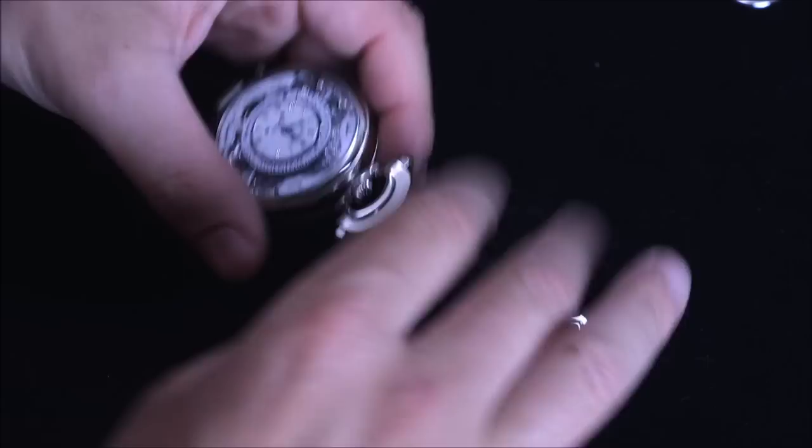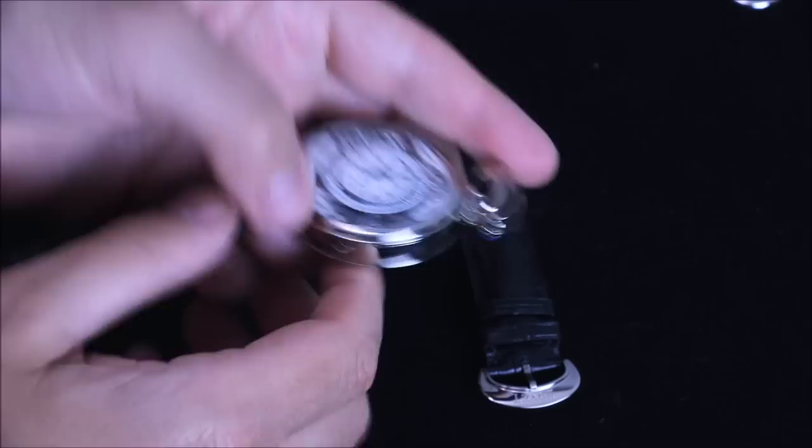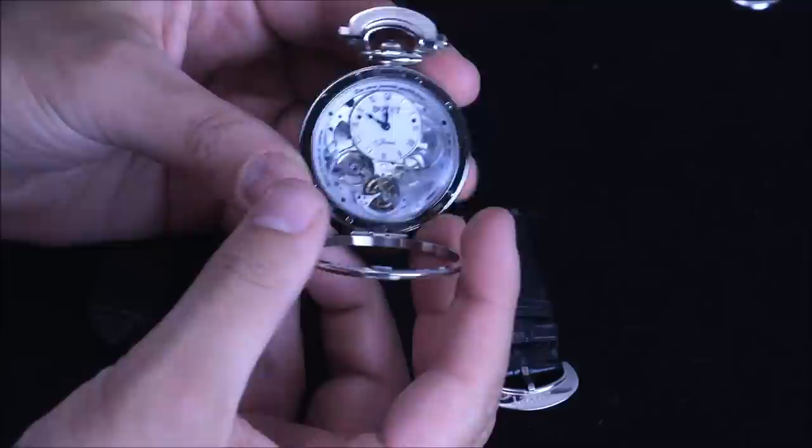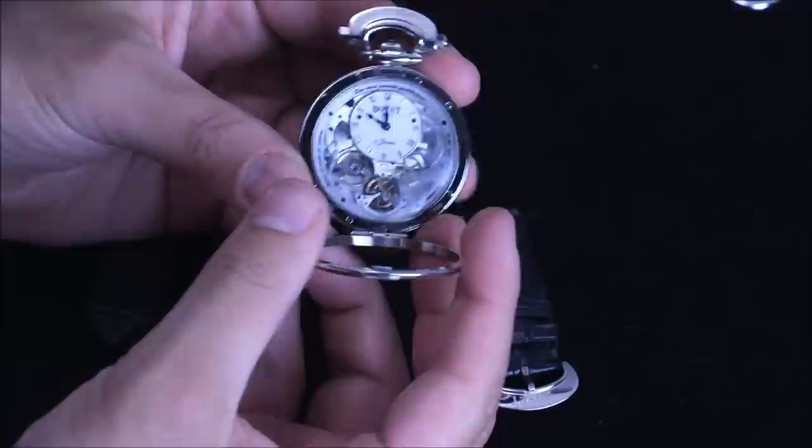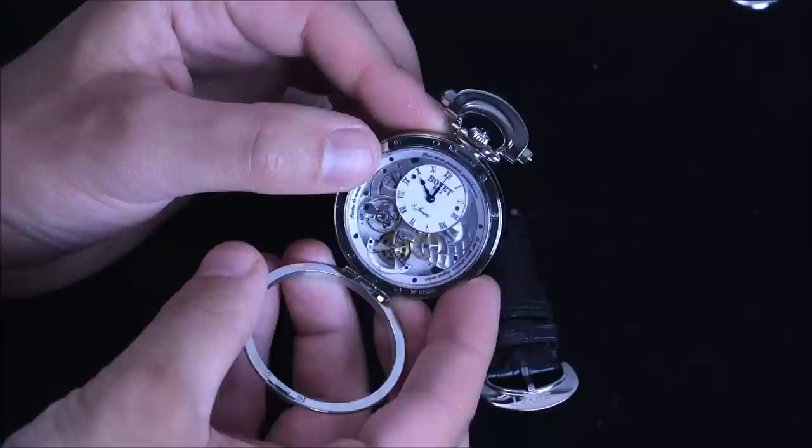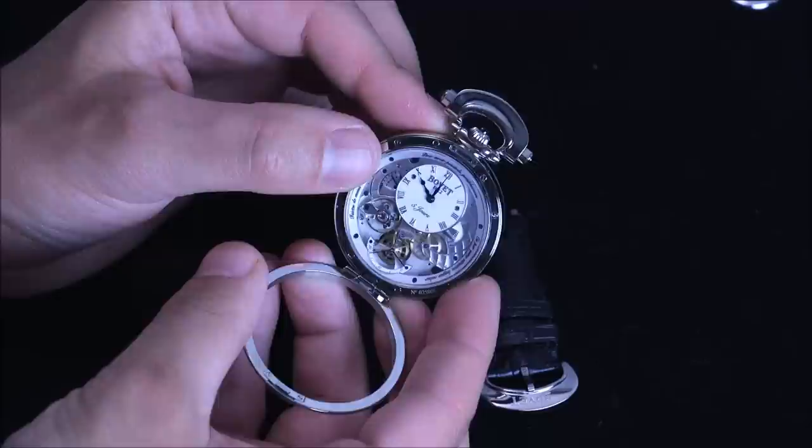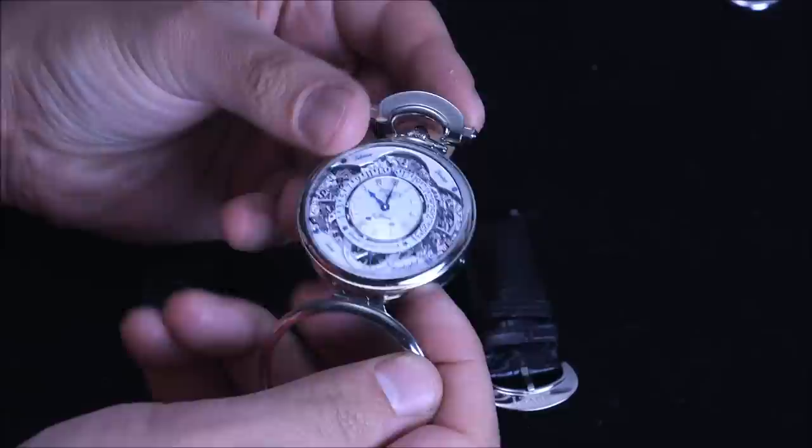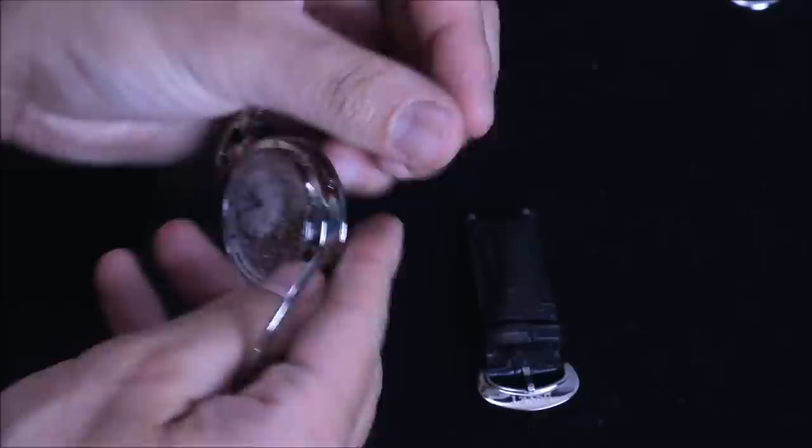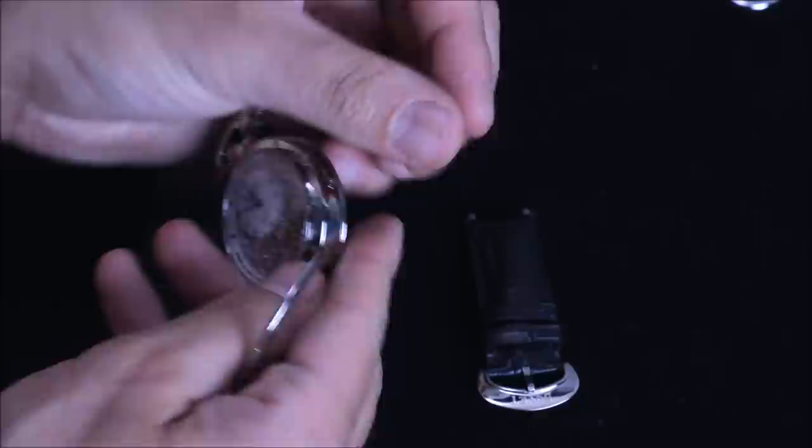The basic movement, I'm actually going to start by taking this thing apart. Look at that, strap just comes off. The basic movement has a power reserve of five days. It's manually wound. There is a power reserve indicator, which is right here to the left of the dial on the back. On the back, you also have a subsidiary seconds hand, and they call it a coaxial subsidiary seconds hand because it actually goes all the way through.